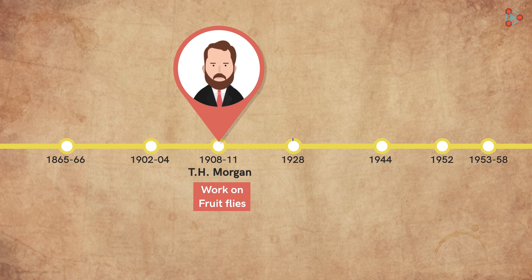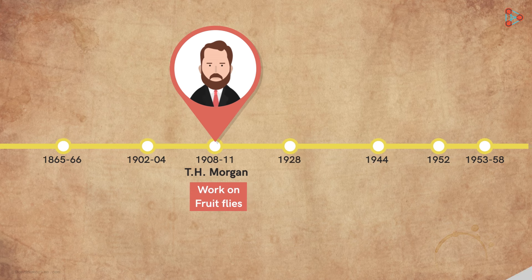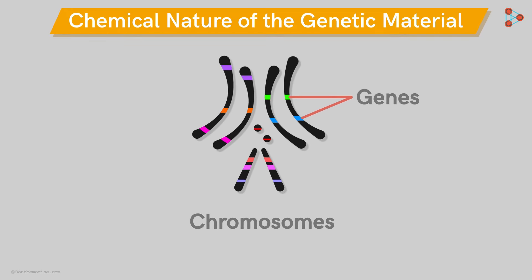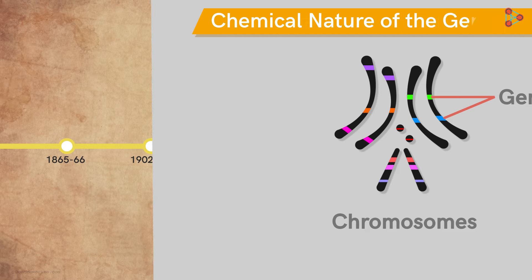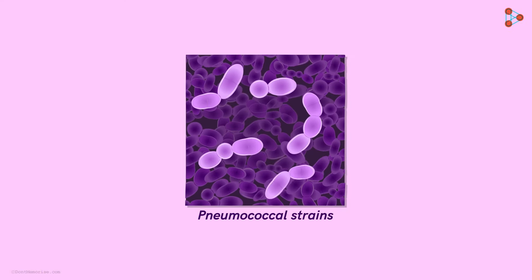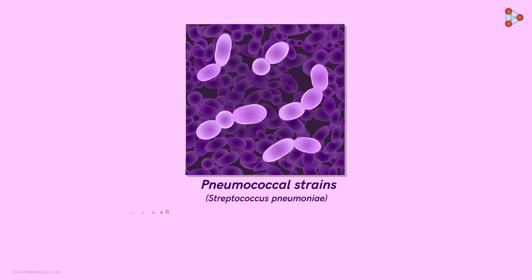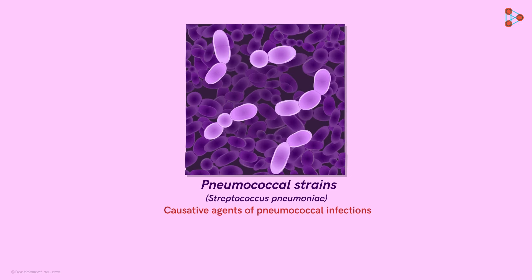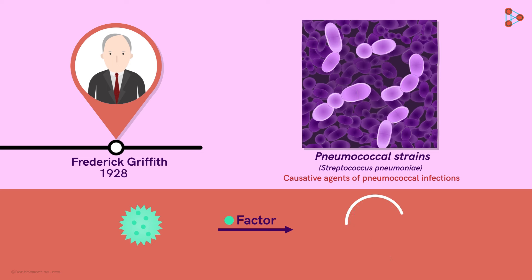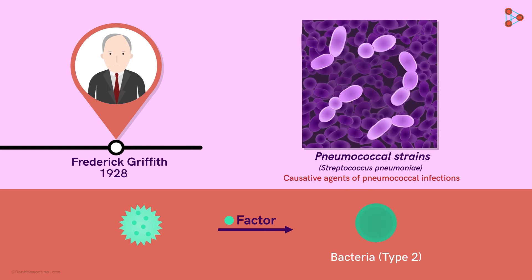Now comes the next one. After Morgan gave experimental evidence that genes for the traits are present on the chromosomes, the scientific world then got together to find out what exactly makes up these genes and chromosomes — in other words, the chemical nature of this genetic material. In the same era, a British bacteriologist was busy handling his pneumococcal strains, the bacteria named Streptococcus pneumoniae, which are the causative agents of pneumococcal infections. Frederick Griffith found out that there is some factor that helps transform one bacterial type into the other.